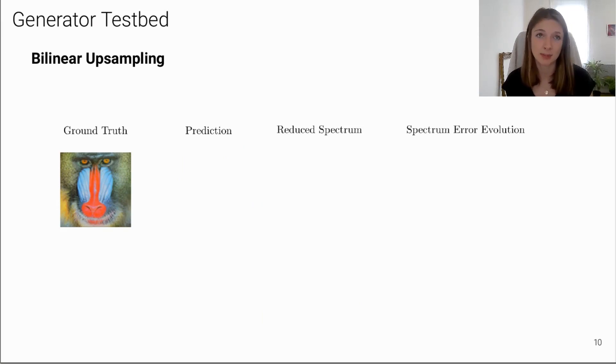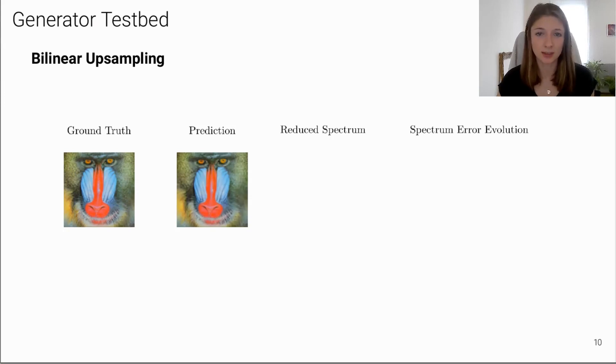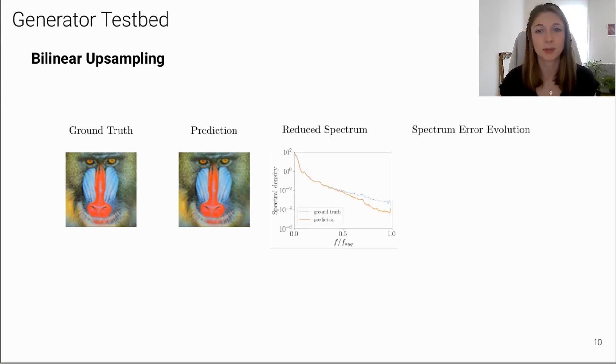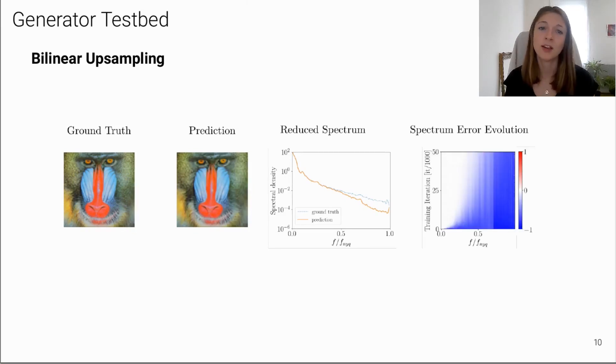We first consider bilinear upsampling, which is for example used in StyleGAN. For reference, you can see the ground truth image on the left. We visualize the reconstructed image and the reduced spectrum compared to the ground truth spectrum. Further, on the right we plot the relative error between the ground truth reduced spectrum and the prediction over the course of training. This visualization allows us to detect how fast low and high frequencies are learned during training, which makes it suitable to detect a frequency bias.